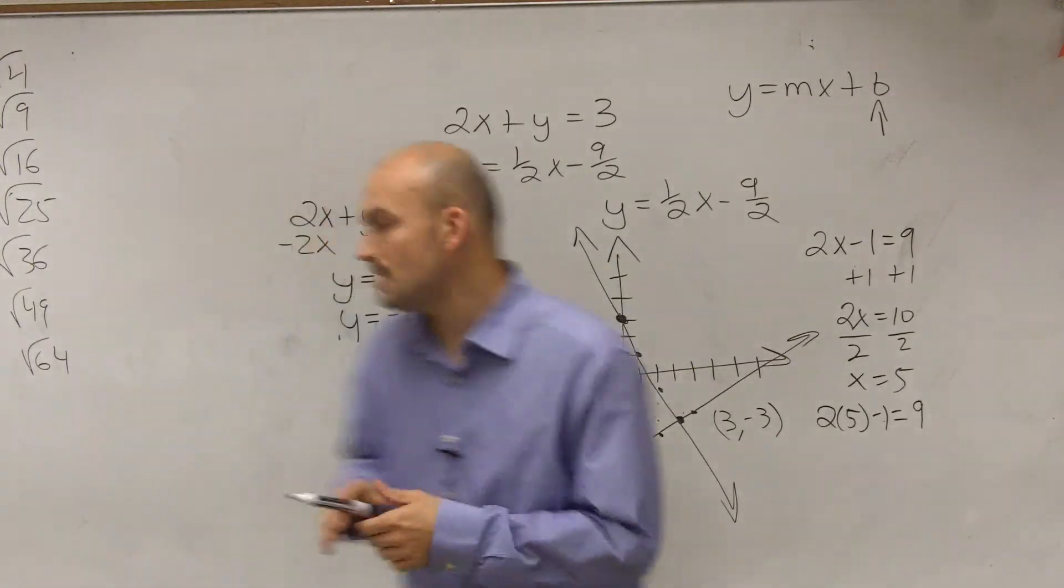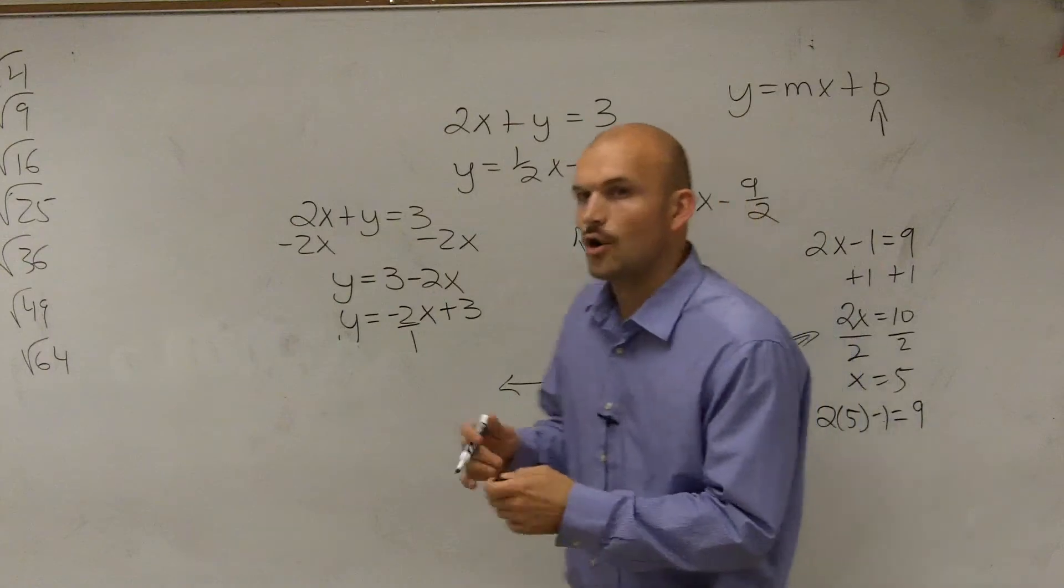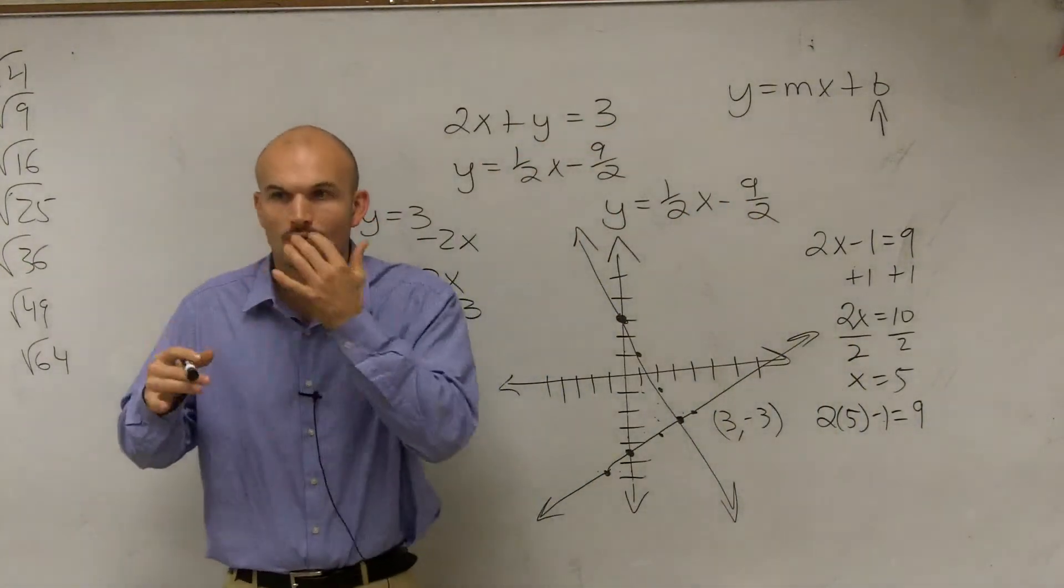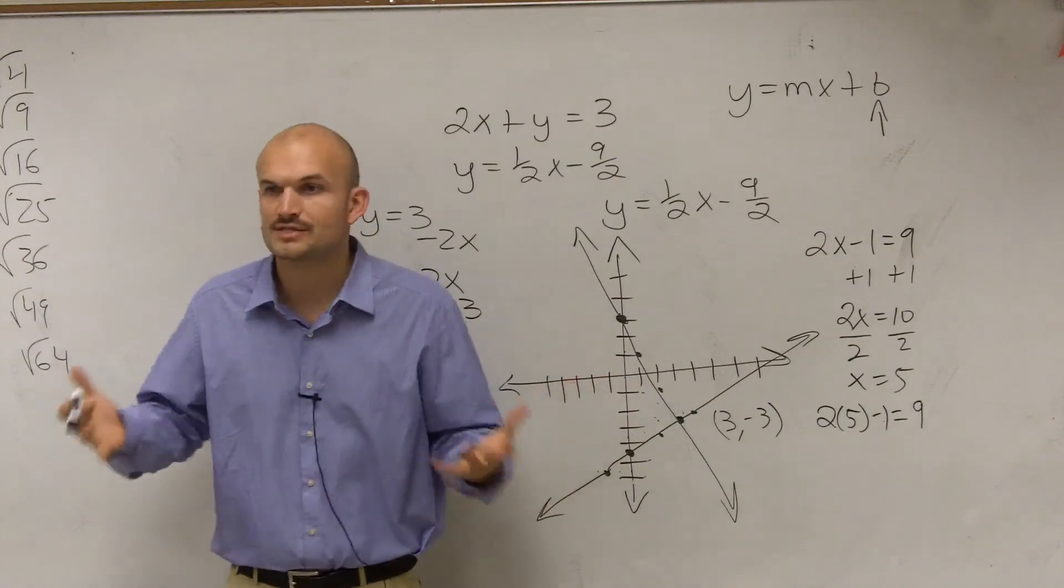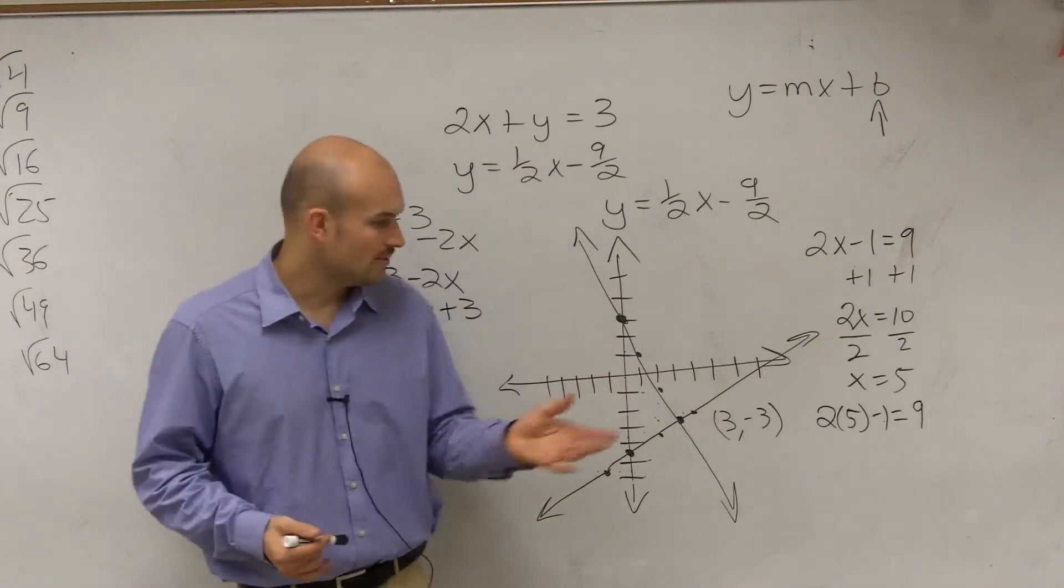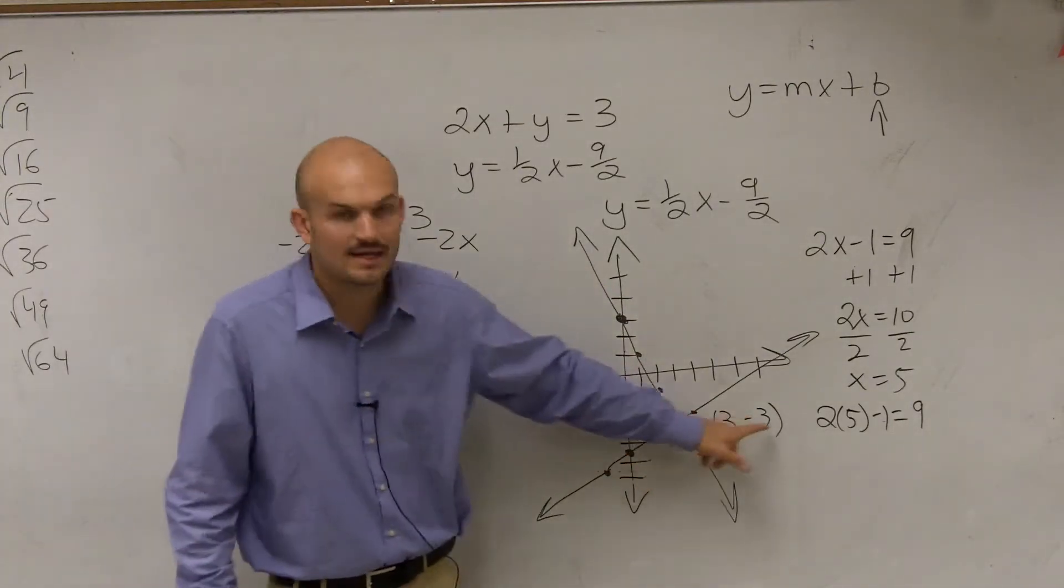Now, when we're talking about systems of equations, when I say solve, I want to find what is the point or the solutions that make both equations true. So we look at this, and what we notice is at that intersection, 3 comma negative 3.